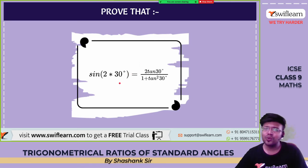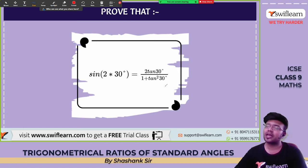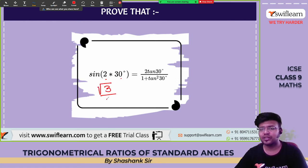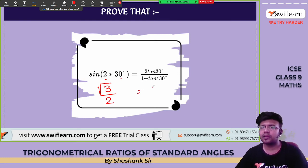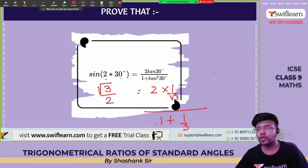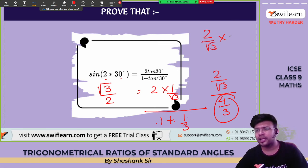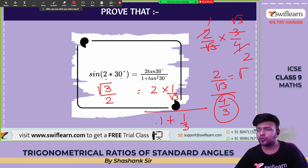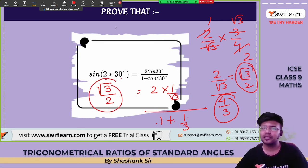Prove that sin(2×30°) = 2tan30° / (1 + tan²30°). LHS: sin 60° = √3/2. RHS: tan 30° = 1/√3, so 2×(1/√3) divided by (1 + 1/3). Taking LCM: denominator becomes 4/3. So RHS = (2/√3) ÷ (4/3) = (2/√3) × (3/4). The √3 cancels: 2×3 / (√3×4) = 6/(4√3) = √3/2. LHS = RHS. Hence proved.